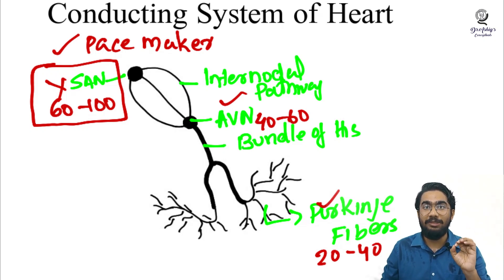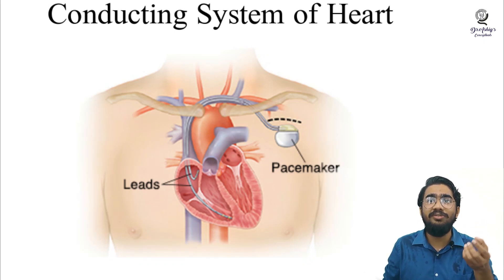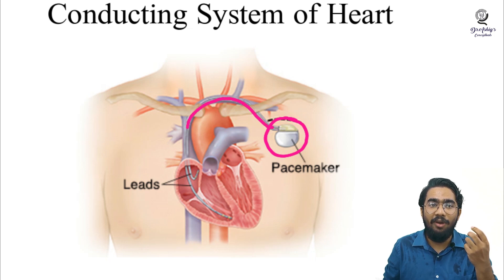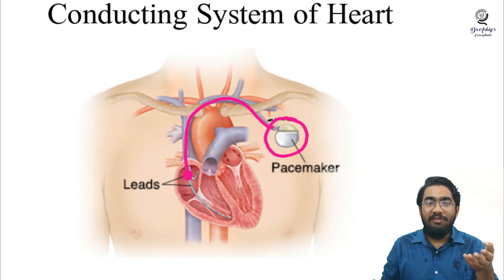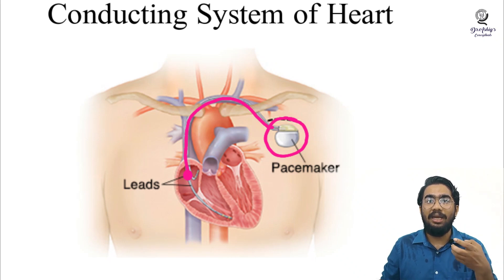The artificial pacemaker is installed when the sinoatrial node is dysfunctional. It is a metallic device with the ability to produce electric signals at frequent intervals. It is placed just below the skin, with its leads — the electrodes — positioned at the site of the sinoatrial node in the heart. The artificial pacemaker then produces electric signals at a rate of 60 to 100 per minute, which spread through the electrodes into the heart, causing it to contract normally.